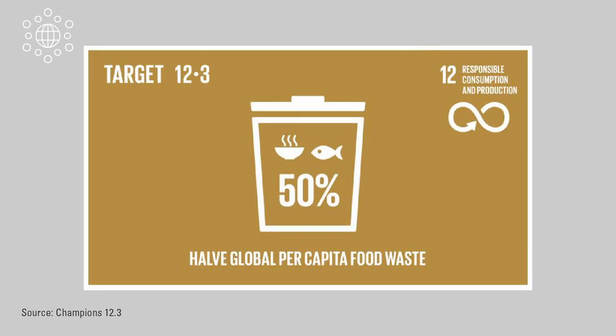This is why the UN has one of its sustainable development goals, SDG 12.3: by 2030, halve the per capita global food waste at the retail and consumer levels and reduce food losses along production and supply chains, including post-harvest losses.